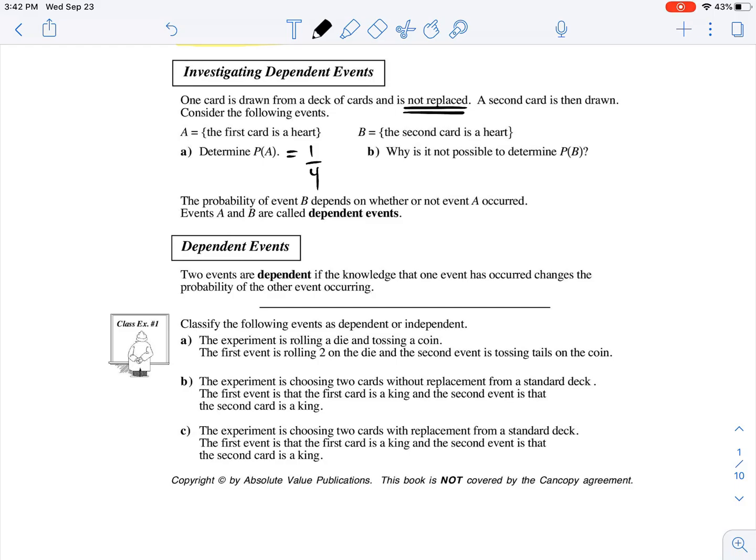And really, that's because we don't know what happened when we pulled that first card. Because if we pulled a heart, that's going to change the probability of the second heart being drawn. And if we didn't draw a heart, then that's also going to change the probability of the second one being a heart.